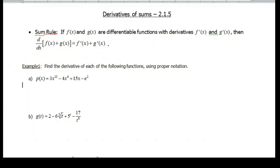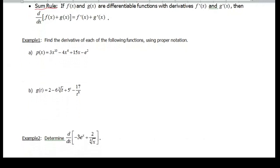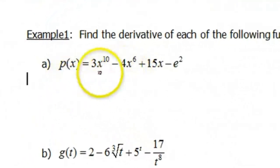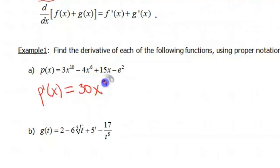Example one says find the derivative of each of the following functions using proper notation. So the first function here we have is a polynomial, p(x) = 3x^10 - 4x^6 + 15x - e^2. It would be possible to do this the long way using the limit definition, but now that we are using all of our different rules, we can go ahead and apply those. So p'(x) equals, for 3x^10 that's a constant multiple rule, and then in here I see a power rule. So we multiply the 3 by the 10 and get 30x to the 9.